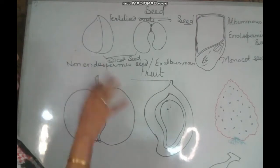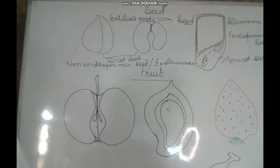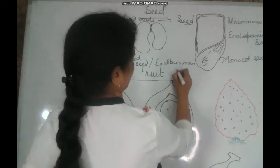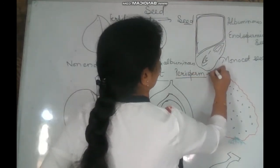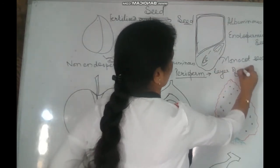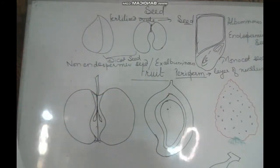When complete seed formation occurs and the embryo is mature, the nucellus is possibly completely consumed. But there are certain cases where a layer of nucellus may persist, and this layer is called perisperm. Perisperm is the layer of nucellus that is left. For example, in black pepper, in cardamom, we find the perisperm layer.